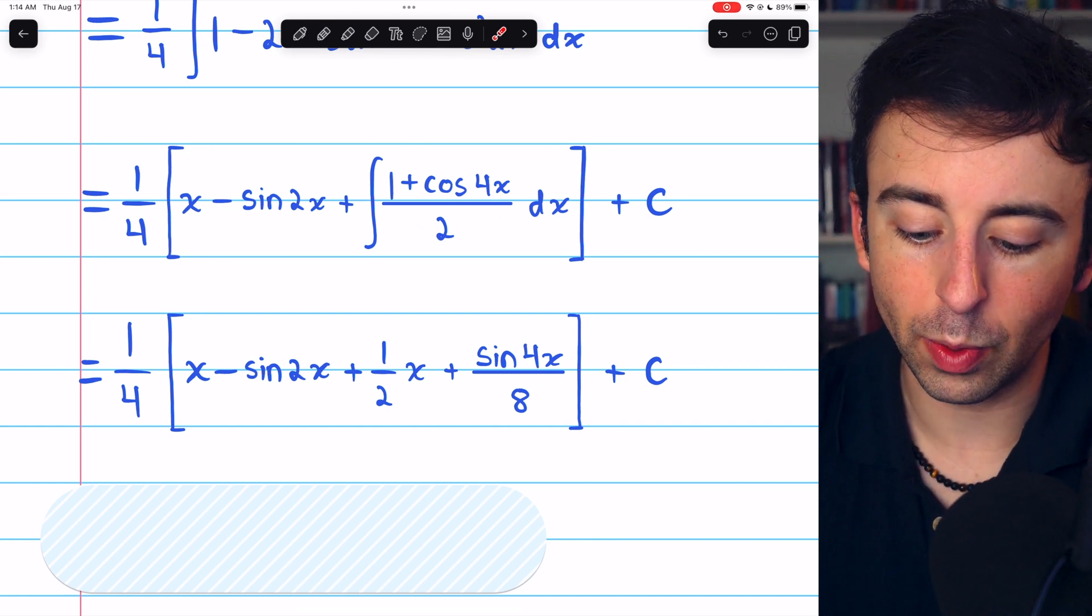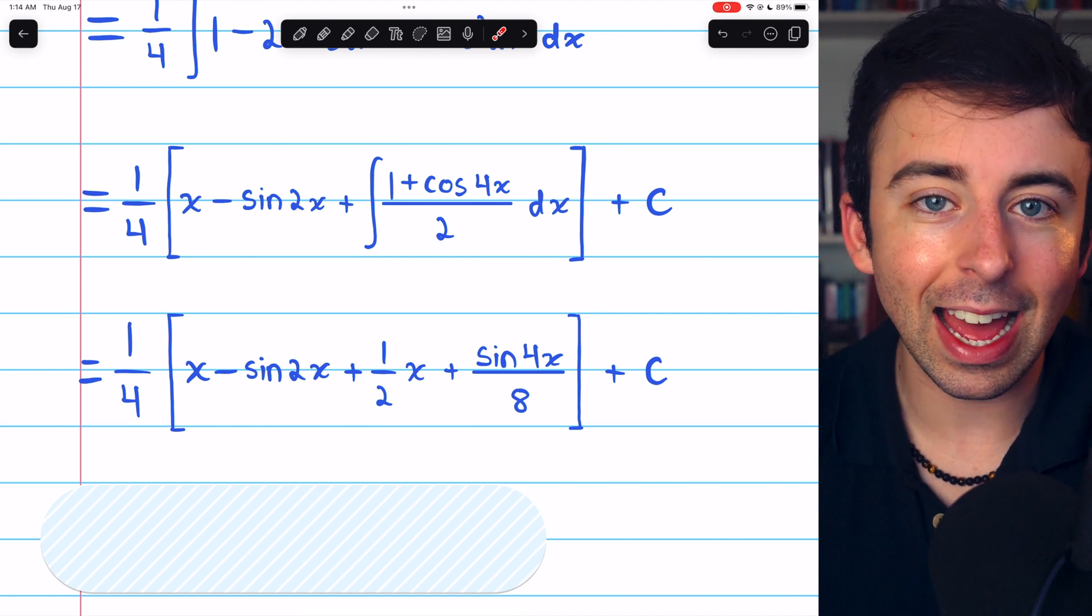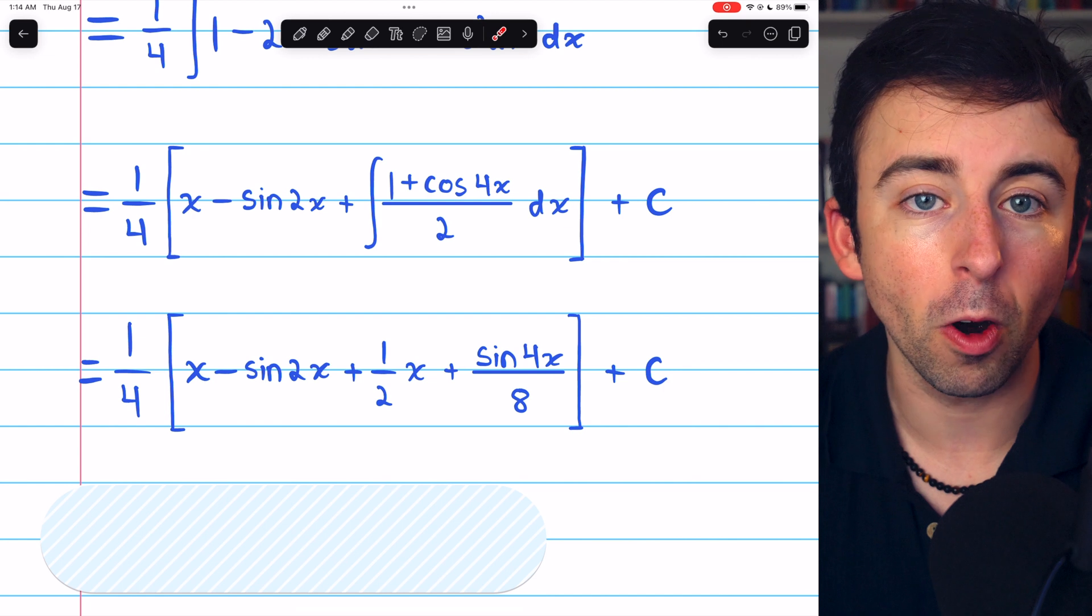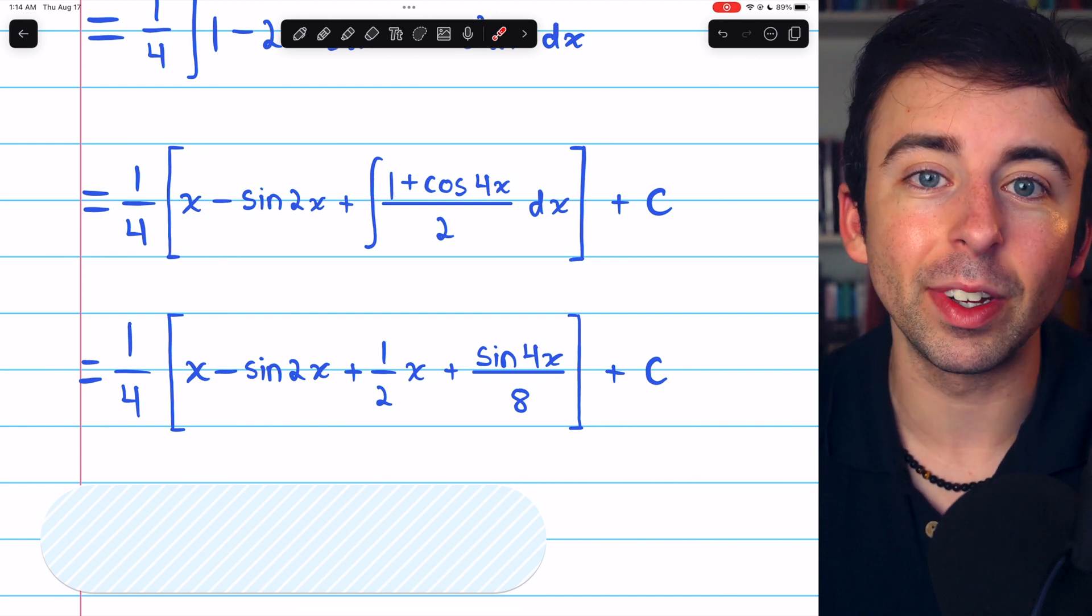Technically, another constant popped out when we integrated this, but in the end, you add a bunch of constants together that are arbitrary, and you just get another arbitrary constant. So, we'll leave it as c.